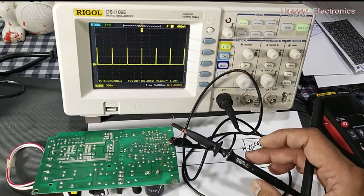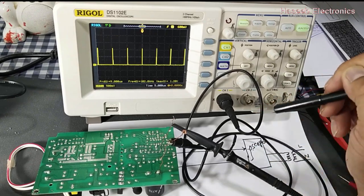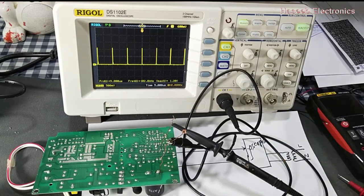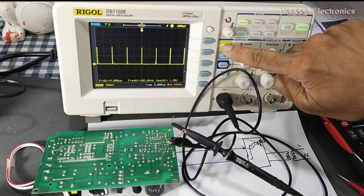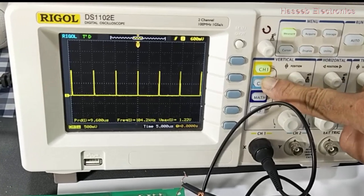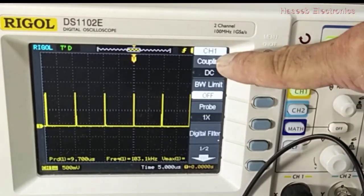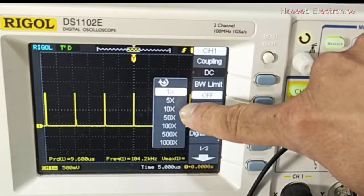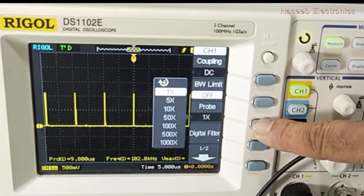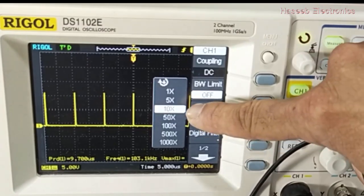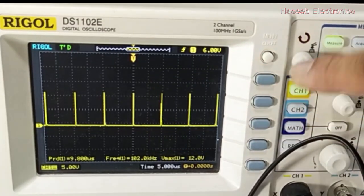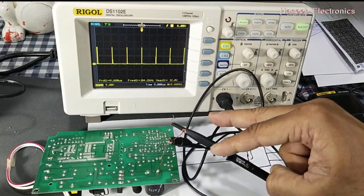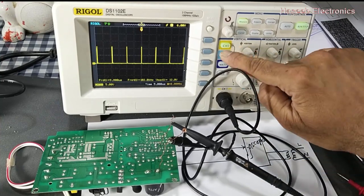Now we set this probe to 10x, applying 10 times attenuated signal at the input port. We have two options. First, we can adjust in the software under channel coupling, then probe settings: 1x, 5x, 10x. We can select 10x probe, and it will display the actual voltage being applied at the input pin.